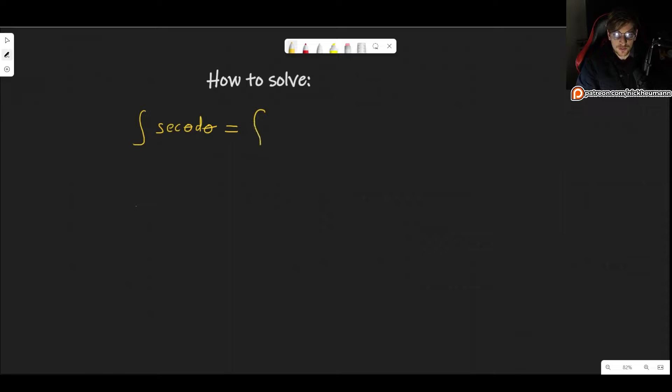So what we do is that we have the integral of secant theta and now we multiply by the secant of theta plus the tangent of theta and we divide of course by the same amount so that we don't actually change anything. This is simply a smart way of writing one. We're multiplying by one, nothing has changed.